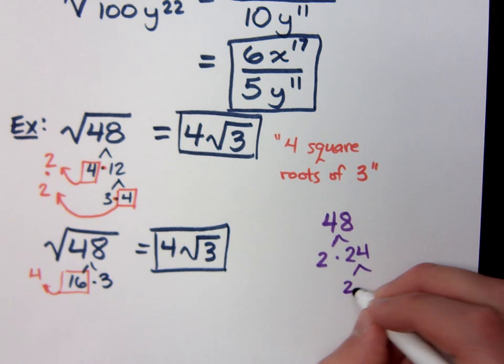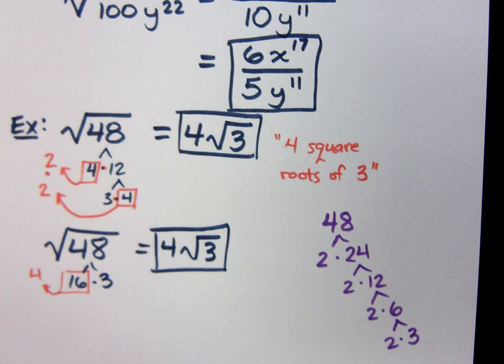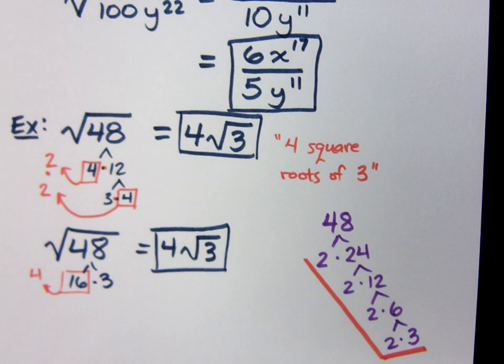I get 24. Well, 2 goes into 24 12 times. 2 goes in here 6 times, and 2 goes in here 3 times. So what I see here on the edge are all of my prime factors written out.